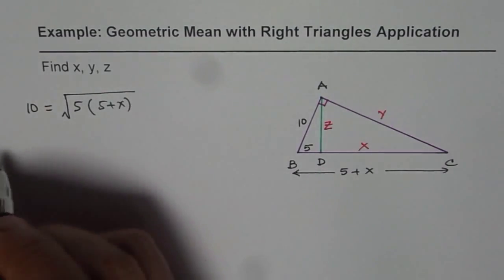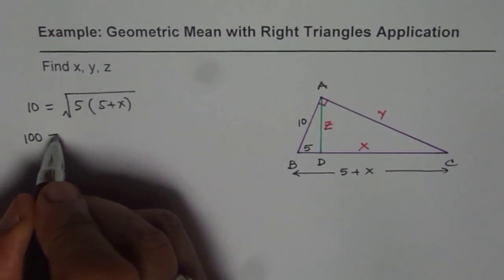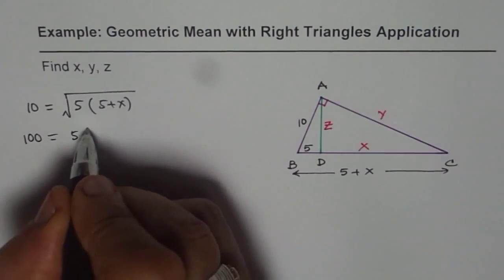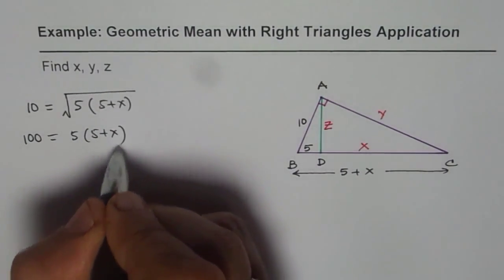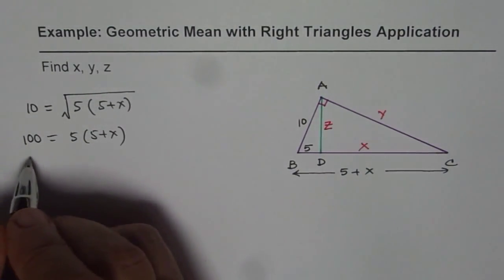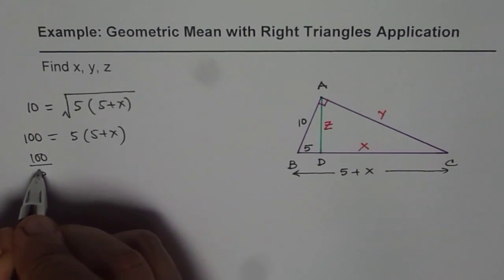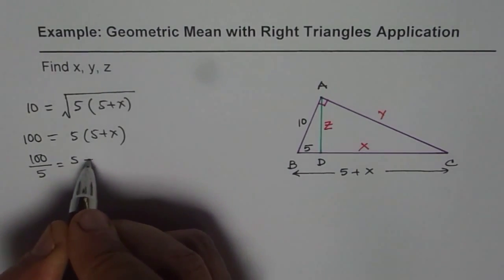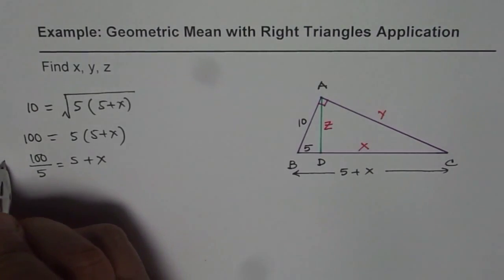We can square both sides and solve for x. So we have 100 equals 5 times 5 plus x. We can divide 100 by 5, so 100 divided by 5 equals 5 plus x which is 20.